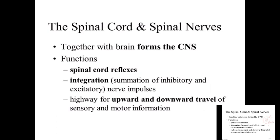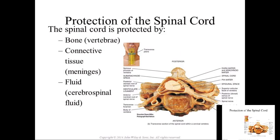The gray matter is everything inside the letter H shape, and everything outside of that is white matter — it's myelinated. The highway for upward and downward travel of sensory and motor information takes place in the white matter. We have sensory tracts and motor tracts throughout this region, and we're going to go through them shortly.